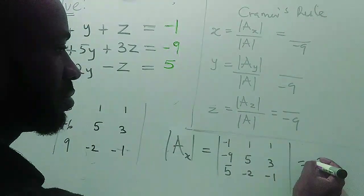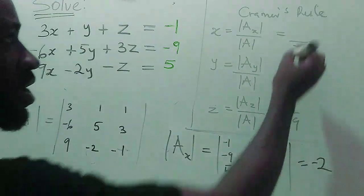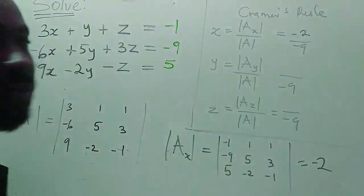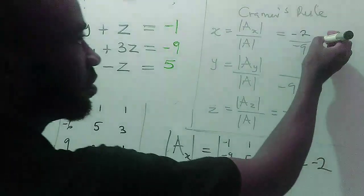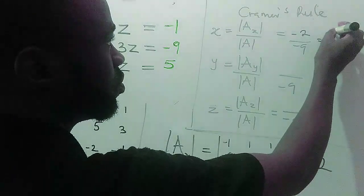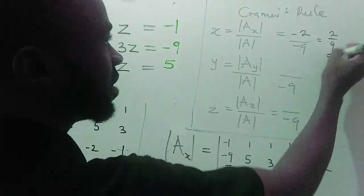So our Ax is minus two, so that breaks down to two over nine as our answer. So we have gotten x.